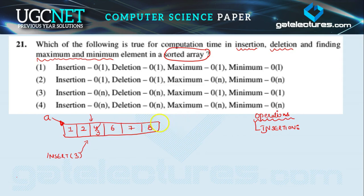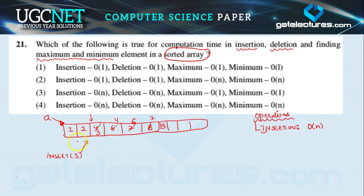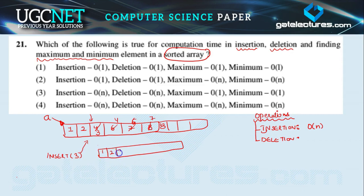After placing 3 at that position, all the elements after it shift one position to the right. So the resulting array has 3 here, then 4, 6, 7, 8. A shift operation happens after insertion. In the worst case this takes O(n) time because the entire list may need to shift. Similarly, deletion also takes O(n) time.